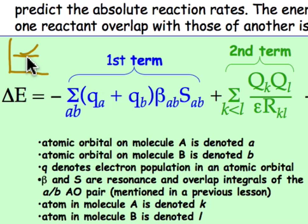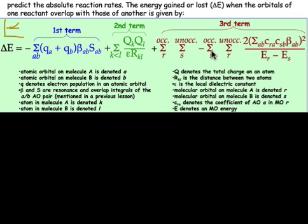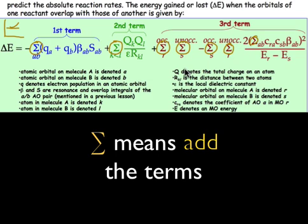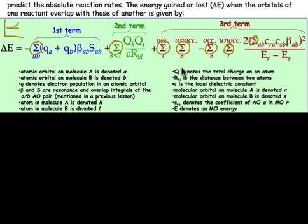There are three main terms to this equation, and if there's anything that jumps out at you, it's the number of σ terms, or summation terms, that appear. Basically, we're going to add, which is what the σ term means, a whole bunch of terms together in order to estimate how that energy changes. And those additions that these σ terms represent are all of the possible orbital interactions that could arise as those two reactants approach one another.